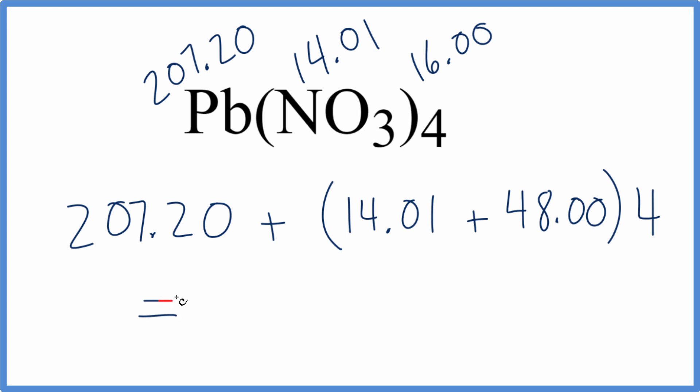We do that, we add these numbers together, multiply by 4, and then we add to this 207.20, and that gives us a molar mass of 455.24 grams per mole.